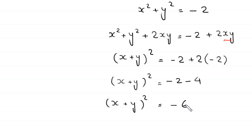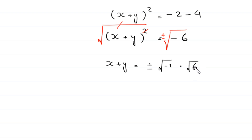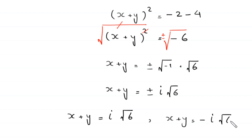To find x + y, we take the square root of both sides. The square root of -6 can be written as √(-1) × √6. Since √(-1) = i, we get x + y = ±i√6. This gives us two values: x + y = i√6 and x + y = -i√6.